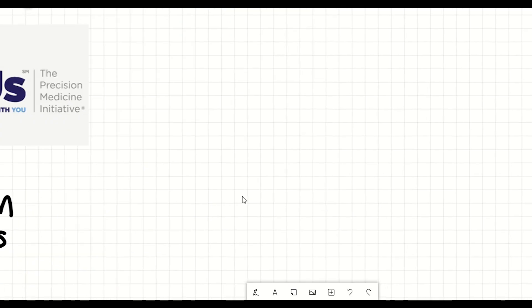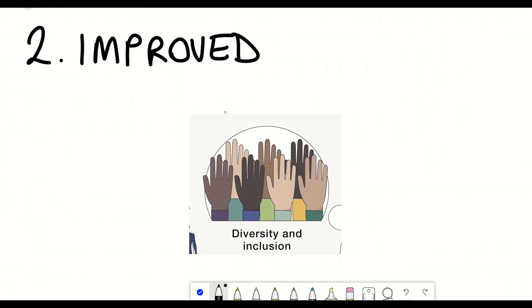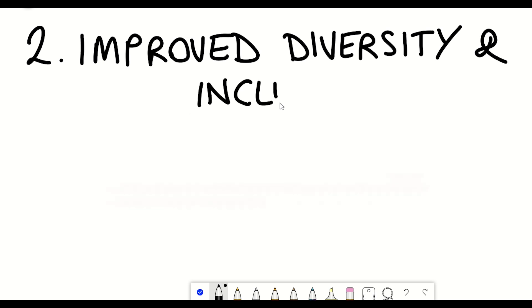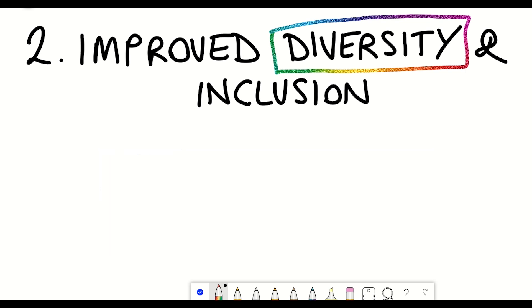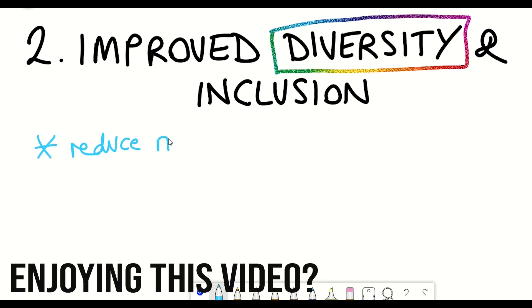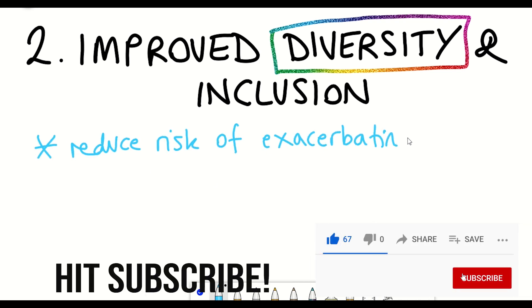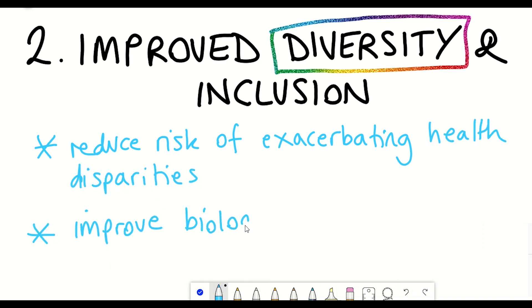The second opportunity is improved diversity and inclusion in science. And so shockingly, less than 3% of the participants in published genome-wide association studies are of African, Hispanic or Latin American ancestries. And 86% of clinical trial participants are white. So there is much room for improvement, which is very much needed if we can reduce the risks of exacerbating health disparities. Moreover, by improving diversity in these studies, it will enable better biological discoveries.